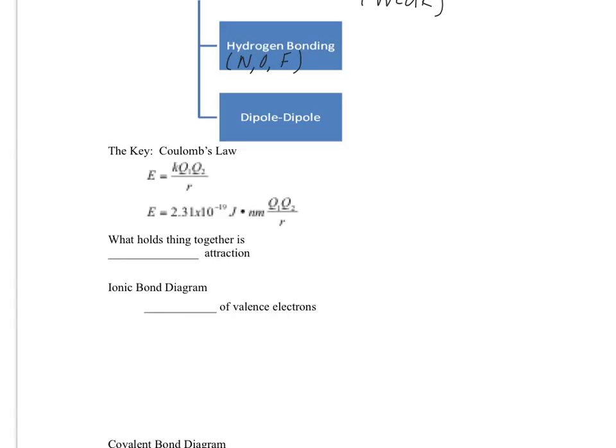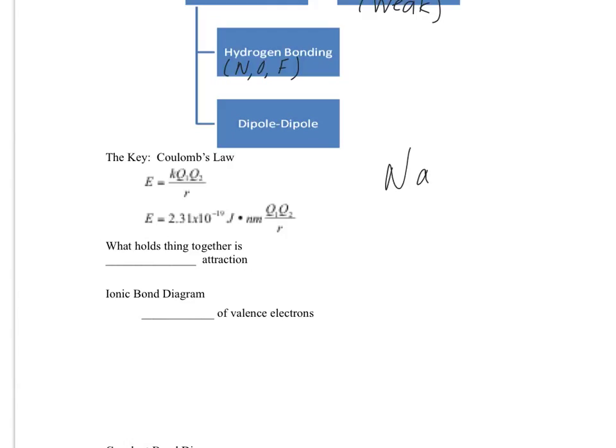We're going to be looking at types of chemical bonds and the energy associated with bonds. One way we can calculate energy is to look at the bond energies, the energy associated with two different elements that are bonded together. Another way that we can do it is through Coulomb's Law. Using the example of sodium and chlorine, when you have a sodium ion and a chlorine ion, they react to form sodium chloride solid. There is energy associated with that interaction of those ions.